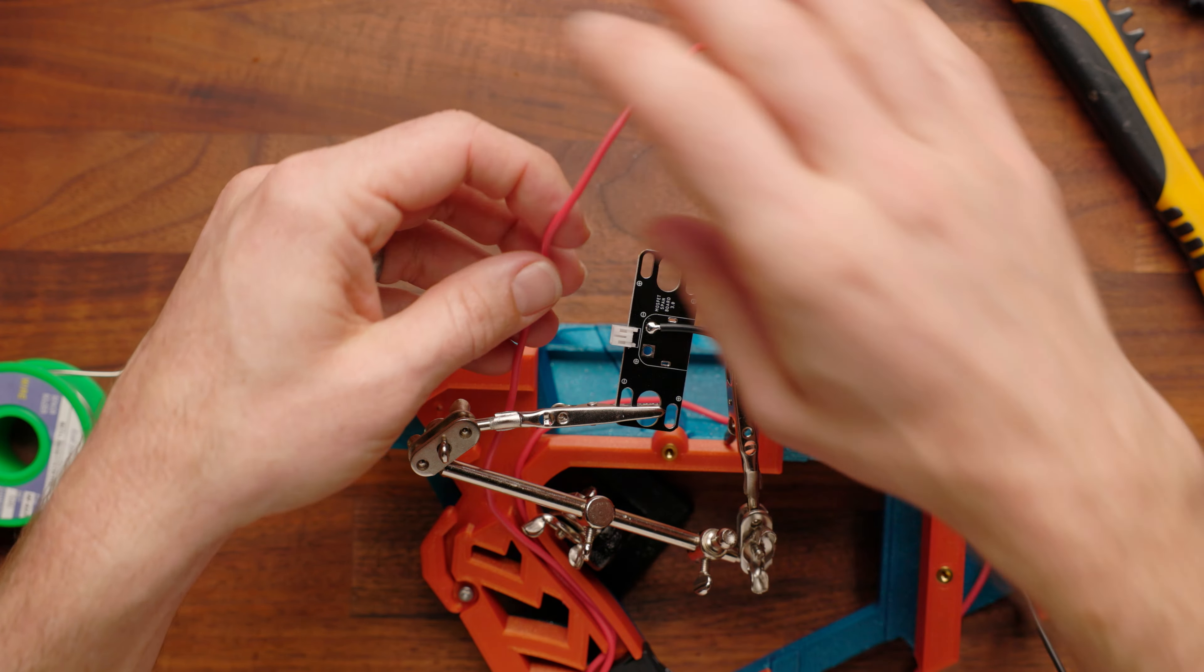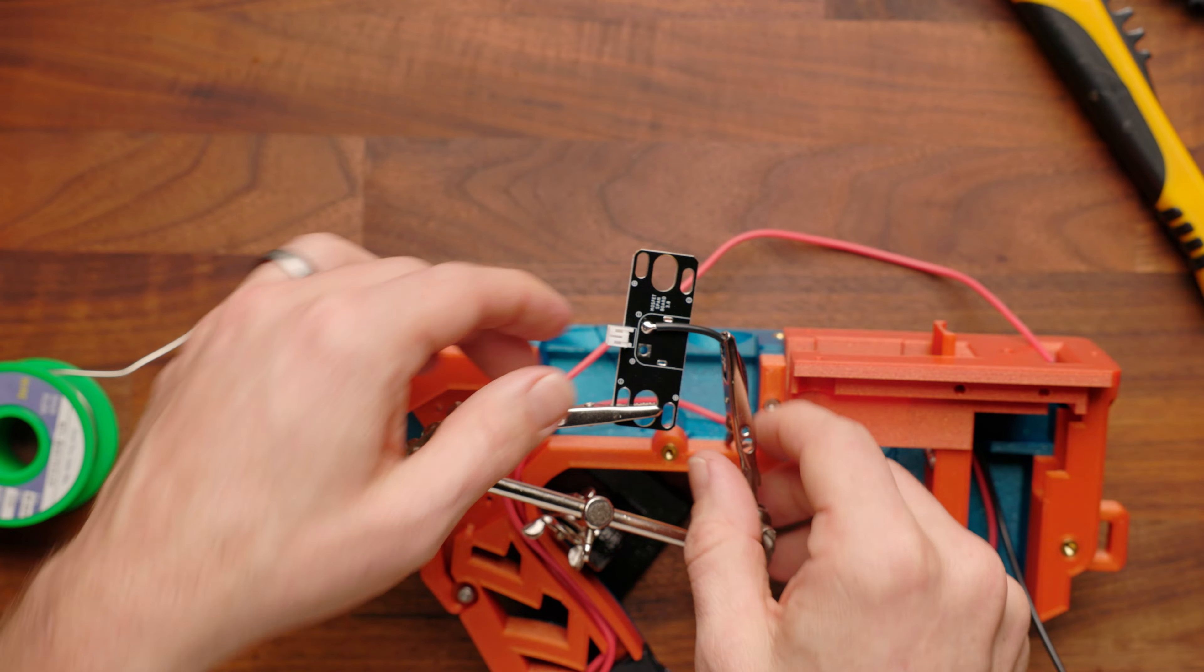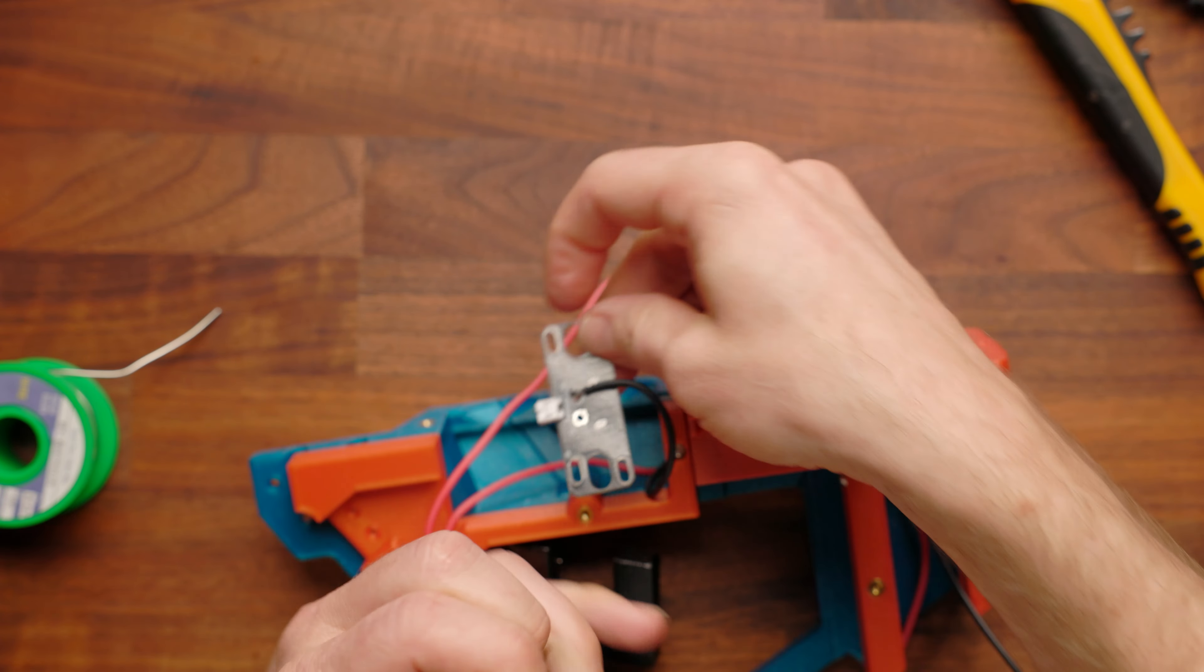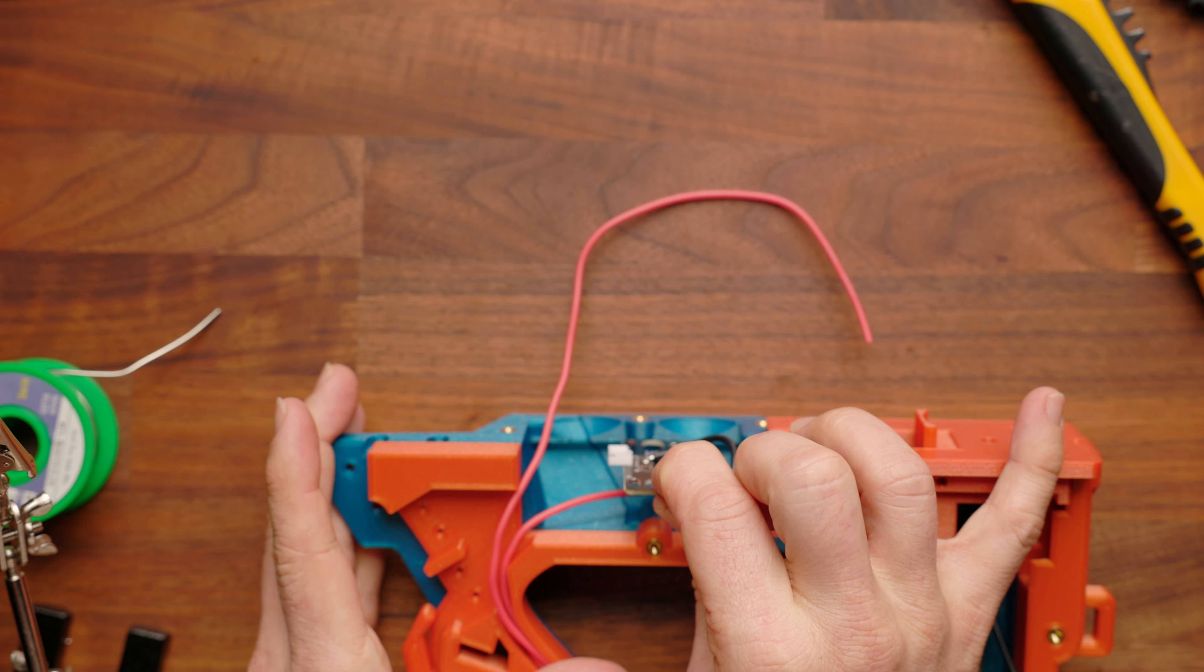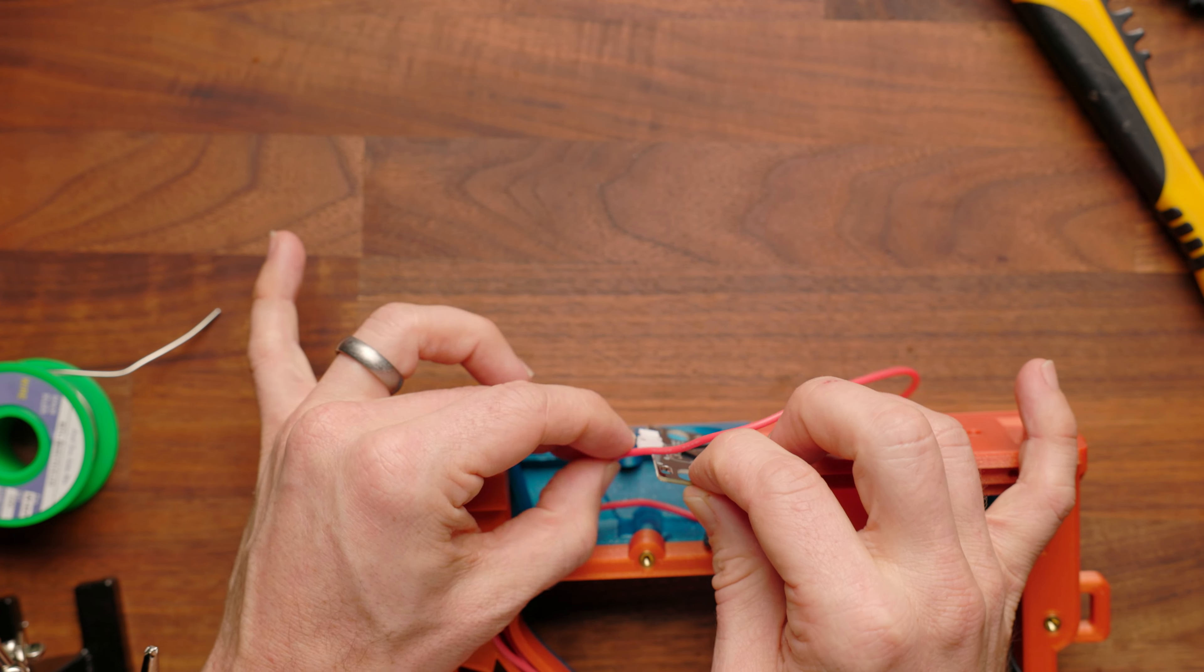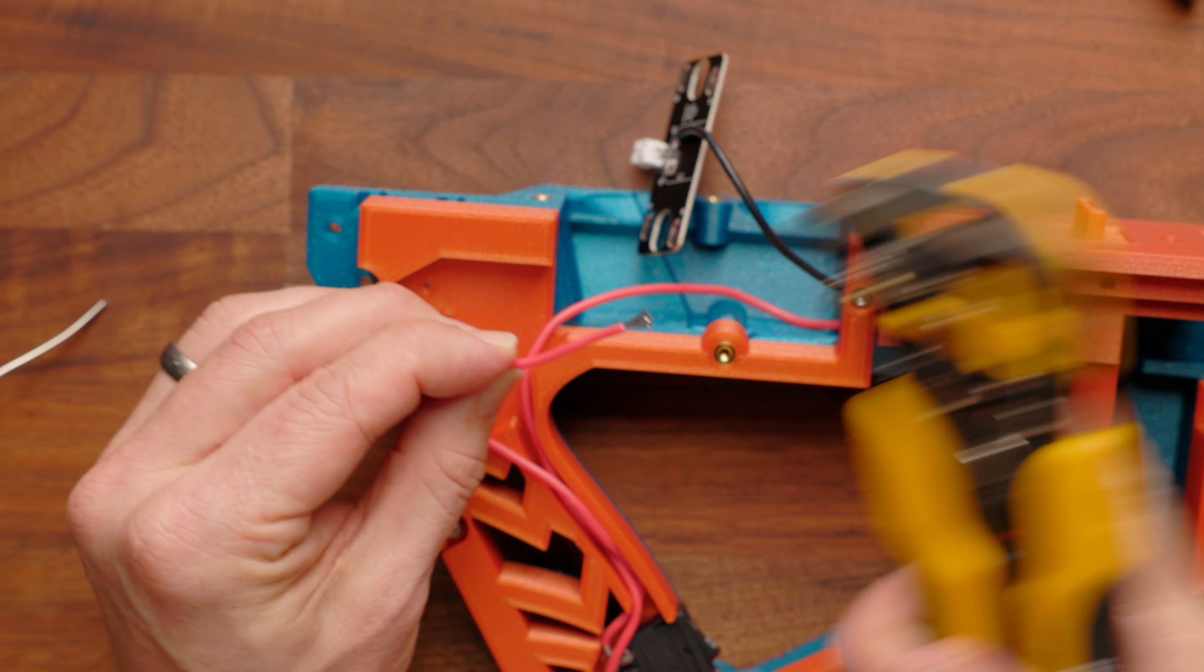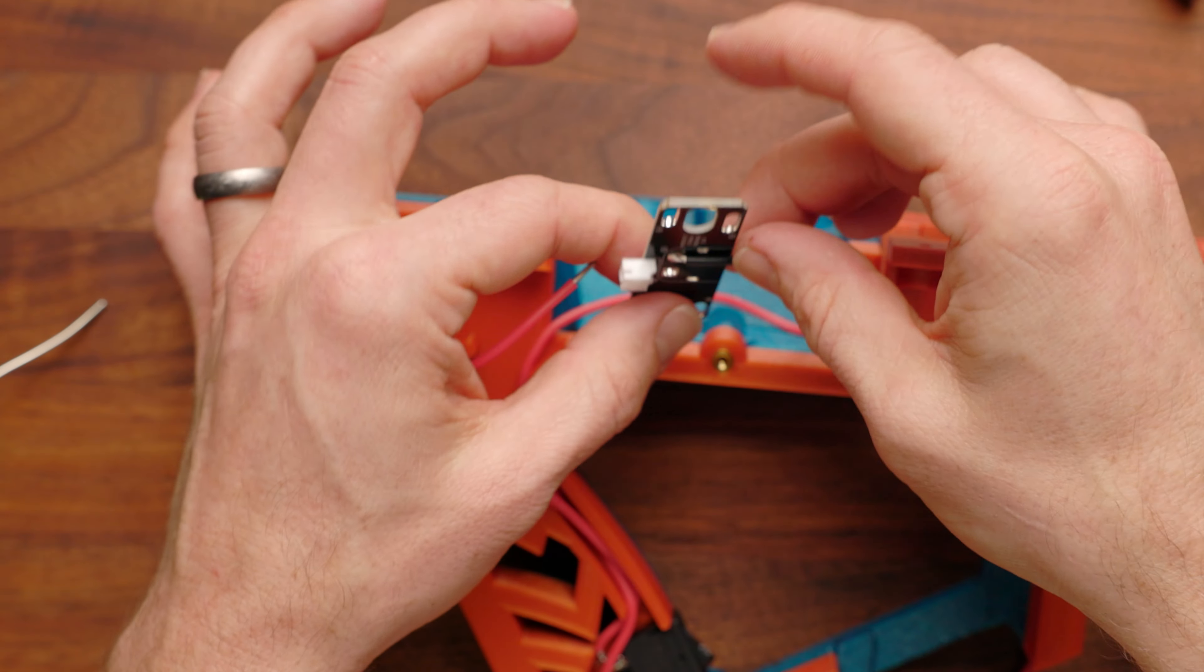And then we can solder in place. And then we'll do the same for the reverse, except this time we're actually going to want to cut the wire to allow enough slack. To visualize, this is going to sit underneath the motors just like this. So you want to leave enough slack there, but not too much slack. I'll strip that end and kind of repeat the same thing we did for the positive.